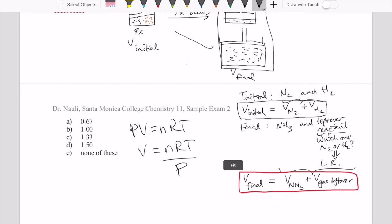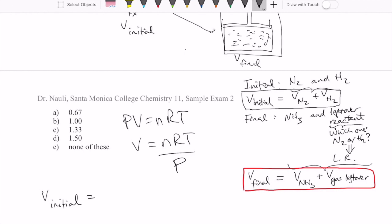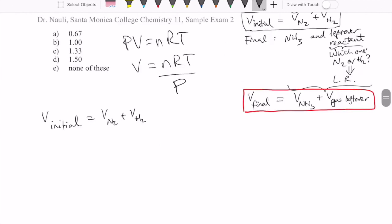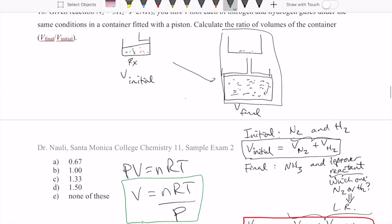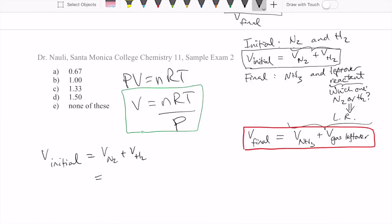Let's calculate volume initial first. We just said it's going to be the volume of N2 plus the volume of H2. Each one of them is going to be calculated using this expression NRT over P. We can write this as N_N2 RT over P plus N_H2 RT over P, which if we factor out the RT over P, it just becomes N of N2 plus N of H2. We were told there's one mole each, so it's basically two moles. So two moles times RT over P is our volume initial.